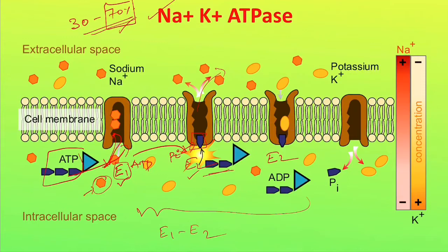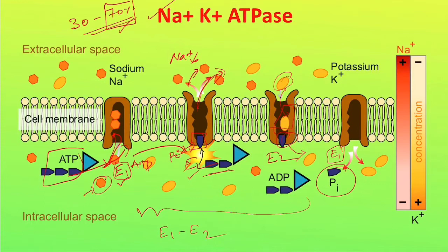Once it becomes E2, its binding sites face the extracellular fluid. Its sodium affinity comes down, so all the sodium goes out, and its affinity for potassium increases. Potassium comes and binds to its binding sites, and once potassium binds, the inorganic phosphate detaches from the transporter, causing the molecule to return to E1 state. This cycle keeps repeating — E1: ATP binds, sodium binds; goes to E2 after ATP hydrolysis; sodium is released, potassium binds; Pi is released; returns to E1. This E1-E2 model is also true for most other pumps, like the calcium pump.